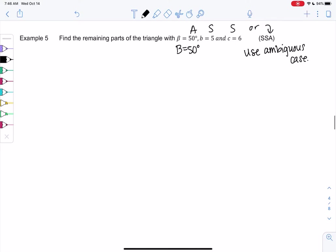So let's draw the triangle. We know B is 50 degrees. C is 6, so I'll just put C right here. And then b is 5. And then the question is, does it make it to the bottom or not? That's what we don't know. Is 5 long enough to make it to the base?